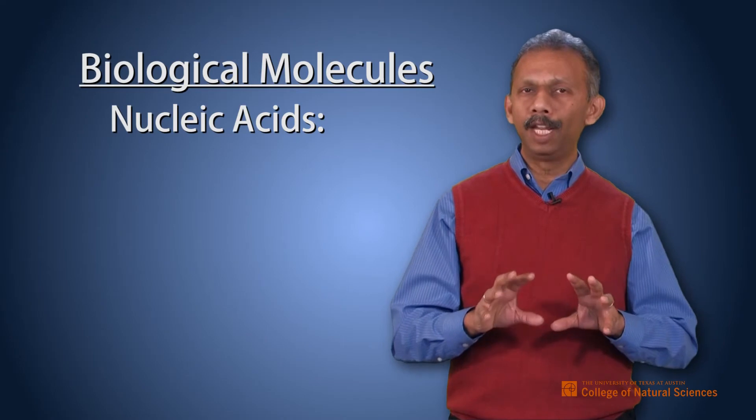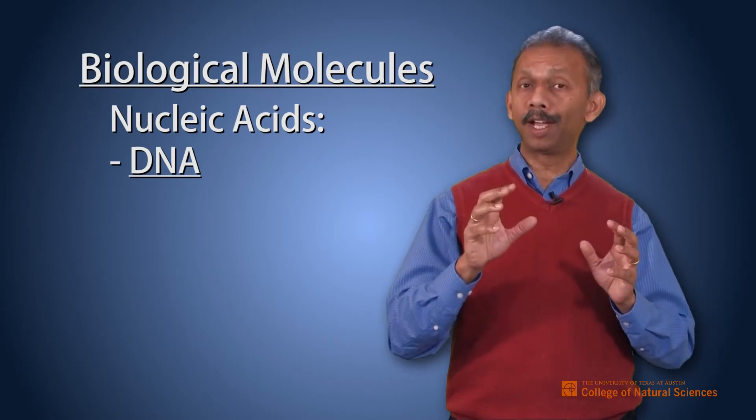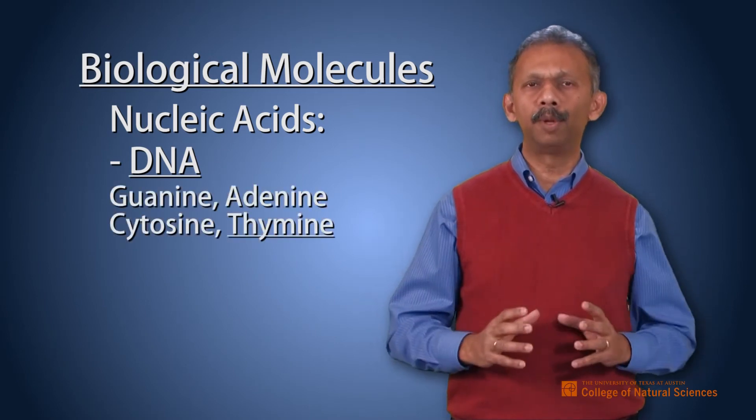In the case of DNA — deoxyribonucleic acid — it is missing an oxygen in the ribose sugar, so it is called deoxyribose. DNA also contains a nitrogenous base and a phosphate group in addition to the deoxyribose. DNA contains guanine and adenine as the purines, and cytosine and thymine as the pyrimidines.